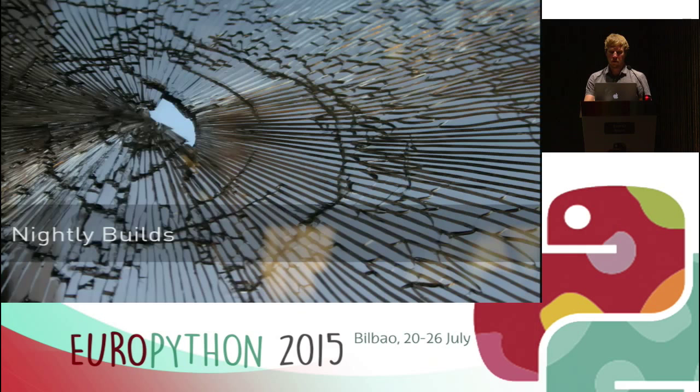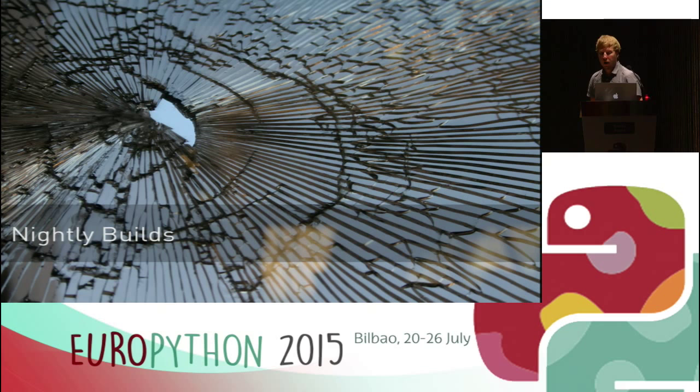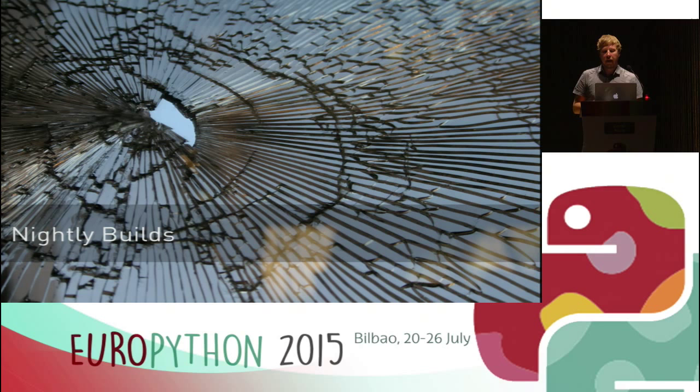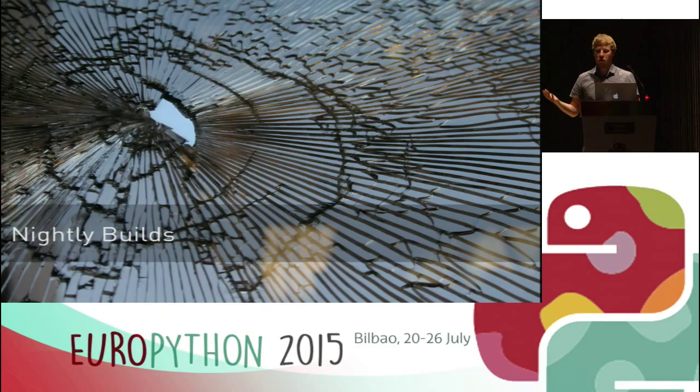When we moved from BuildBot to Hudson, things looked a bit better, but we used nightly builds. A lot of people do that because tests take a while and you don't want to run them on every commit. You run them nightly, and next morning you get a report to your mailing list. The problem is you don't run your build for each integration. Running your build and test process for each commit is the only way to figure out which commit actually caused a regression.